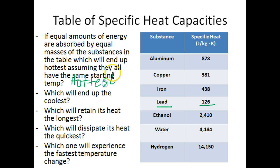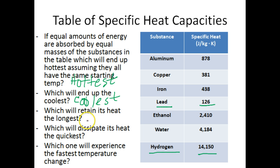So the lead will end up the hottest. And which one will end up the coolest? Well, hydrogen has the highest specific heat capacity, so it's going to take a lot of energy to heat up hydrogen, and it's going to end up the coolest if each substance absorbs equal amounts of thermal energy. Which one will retain its heat the longest? The one with the highest specific heat capacity — hydrogen. The higher the specific heat capacity, the more ability a substance has to hold on to or retain its heat.